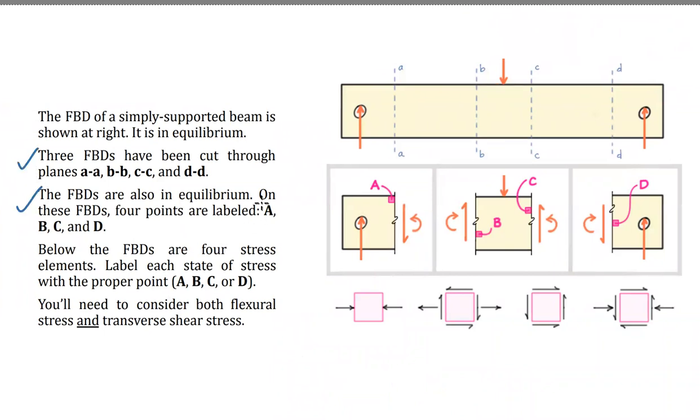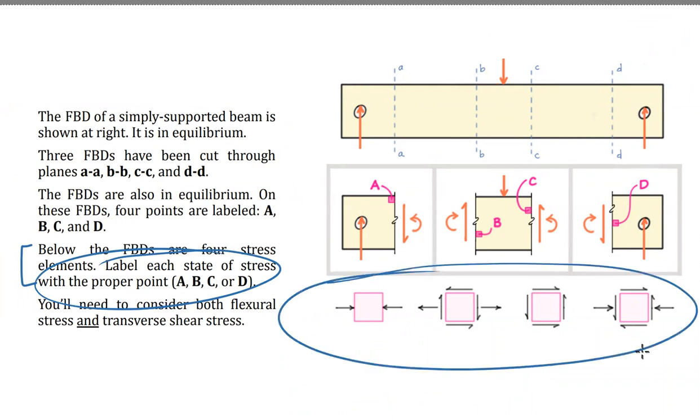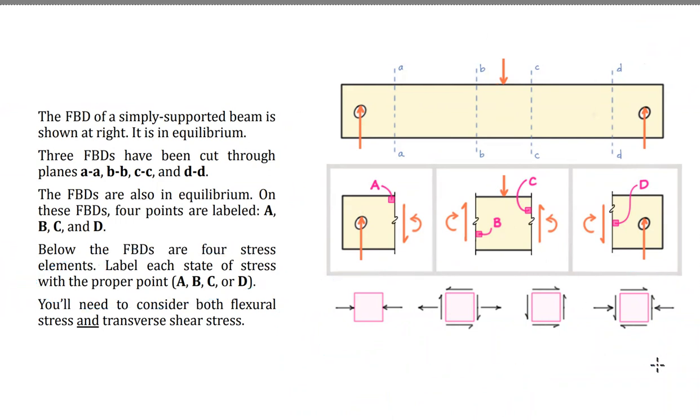The free bodies are in equilibrium. I've labeled these points A, B, C, and D. And below the free bodies are four stress elements. And what we want to do is figure out for these four points, which of those points, A, B, C, D, does this state of stress correspond to?